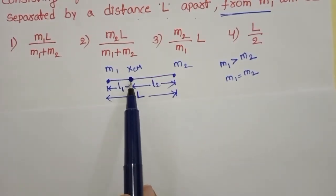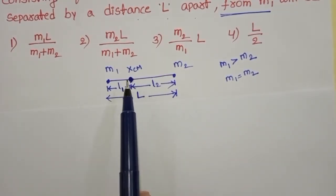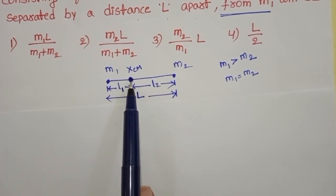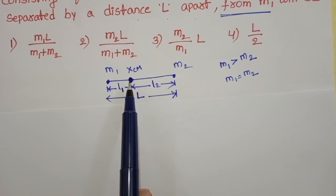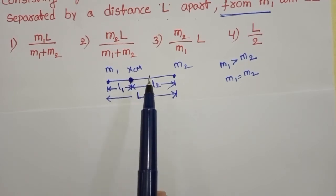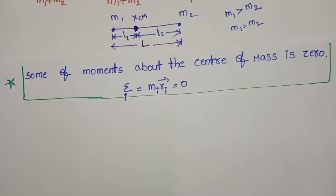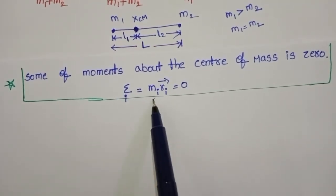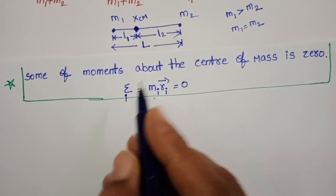This is the position of center of mass. The mass of the system is balanced at this point. The sum of moments about the center of mass is zero. By using this condition, we can derive the position.